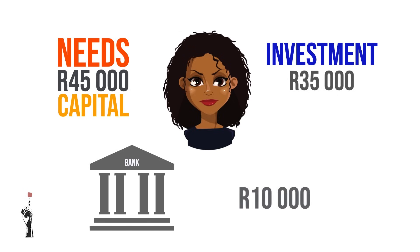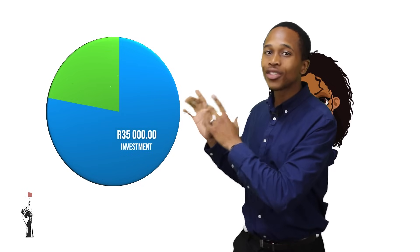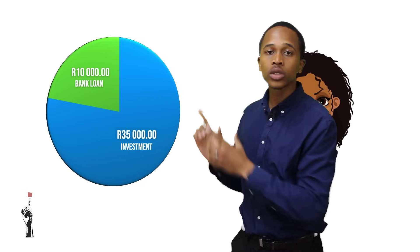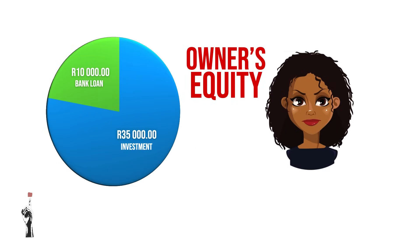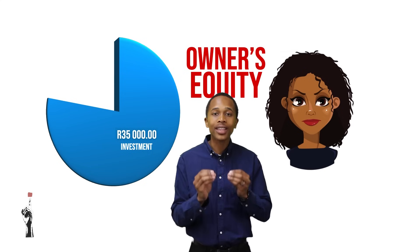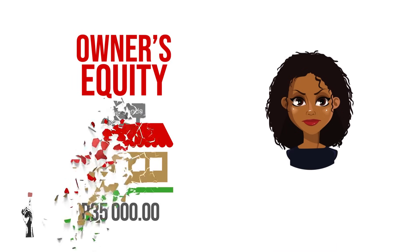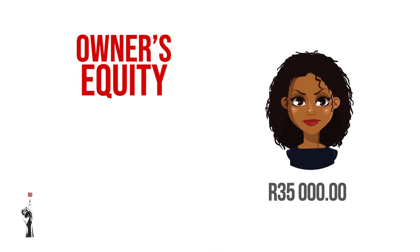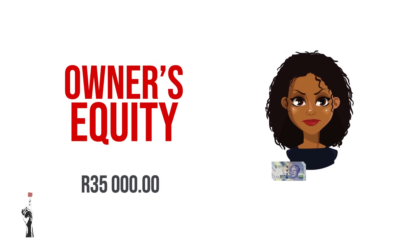Brenda needed another 10,000 rand, so she took a loan from the bank. In total she has 45,000 rand of capital — 35,000 from her own savings and family, and 10,000 from the bank loan. Owner's equity is the 35,000 rand she put in herself, because that money remains Brenda's property. If the business closes, she gets the value of the owner's equity back. If Brenda draws money from the business for personal use, those withdrawals are deducted from the owner's equity — so if she withdraws 5,000 rand, only 30,000 rand of owner's equity remains.